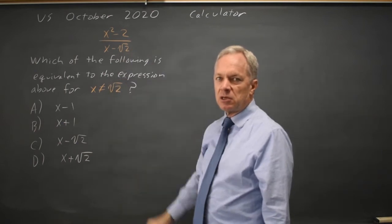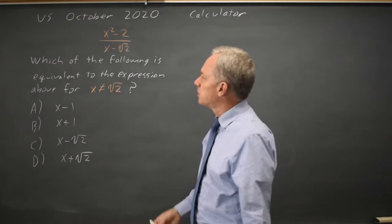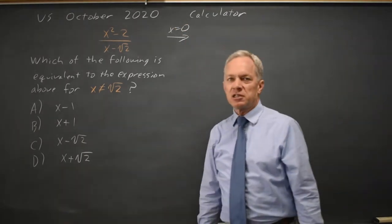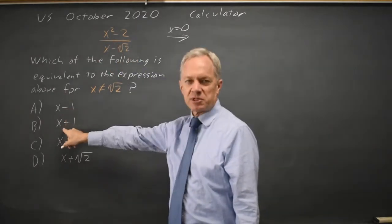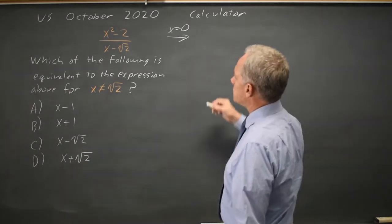For equivalent rational expressions, I prefer to plug in numbers. I'm going to use x equals 0 because I'm really good at 0. I can square 0 quickly, I can subtract a number from 0 or add a number to 0 quickly. We can do 0 quickly, so that's a good number to use.